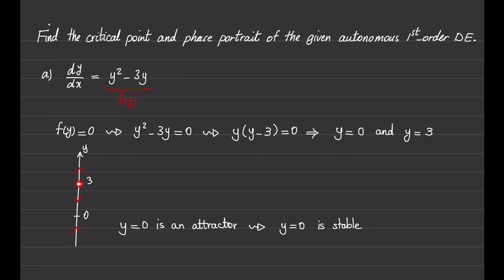For the next critical point, which is y equals 3: for values greater than it, the solution moves upward, and for values less than 3, it moves downward. So we will call y equals 3 a repeller, or we can say that it's an unstable critical point.